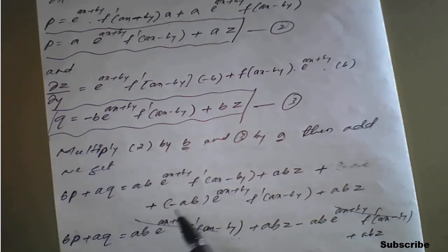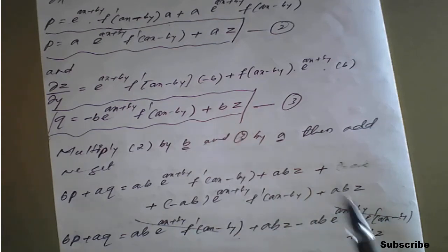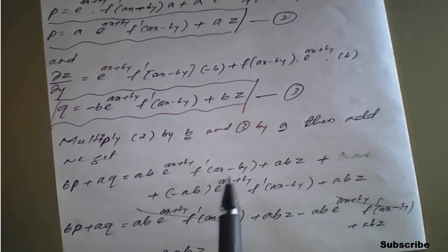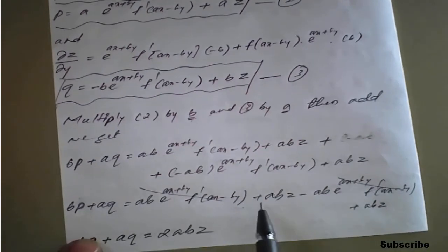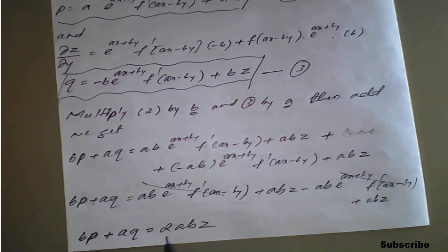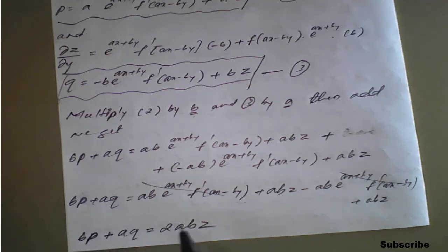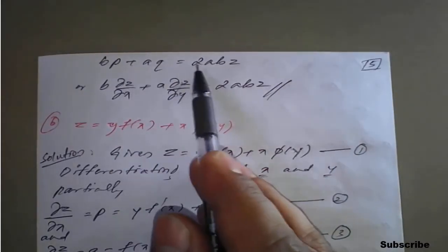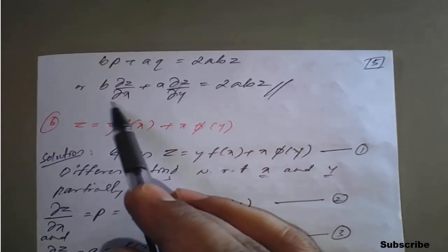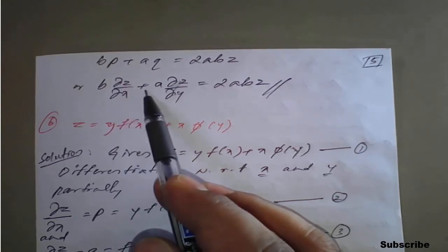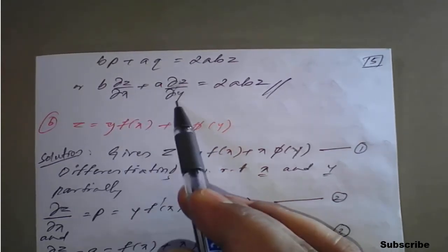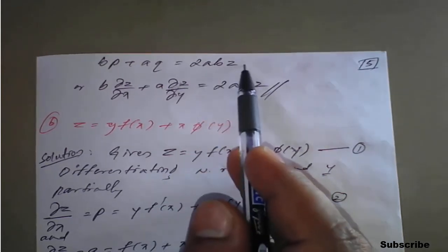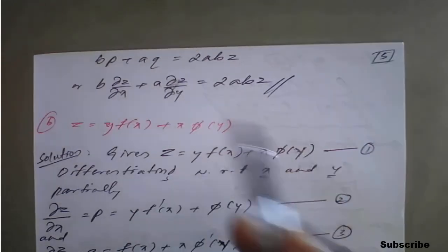Multiplying equation three by a gives minus ab times e raised to (ax + by) into f dash of (ax minus by) plus ab times z. On adding, the plus ab and minus ab f dash terms cancel. The left-hand side gives b times p plus a times q, and the right-hand side gives ab times z plus ab times z, which is 2abz. Therefore the required PDE is b times dou z by dou x plus a times dou z by dou y equals 2abz.